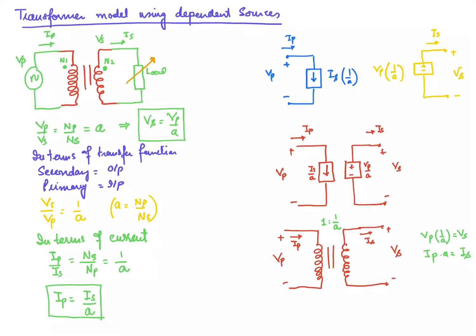In terms of current, from transformer basics, Ip/Is = Ns/Np = 1/a, so Ip = Is/a. We have seen that the current in the primary winding depends upon the current in the secondary winding, and they are related by the factor 1/a.